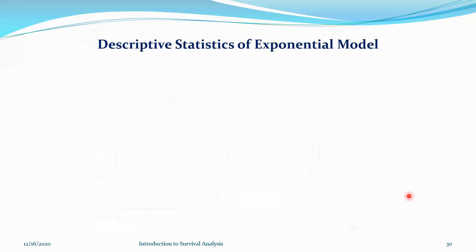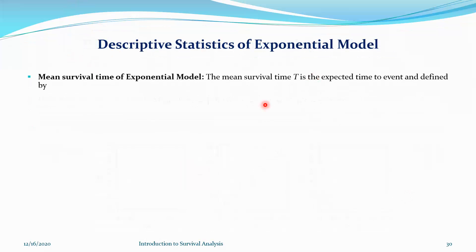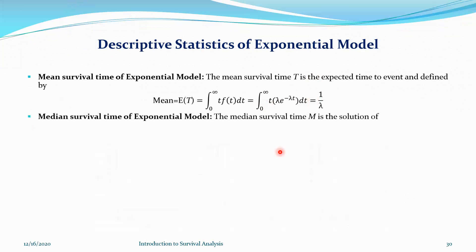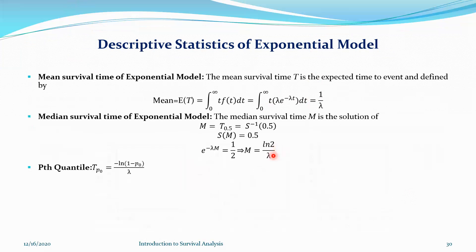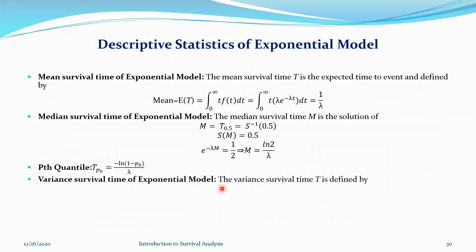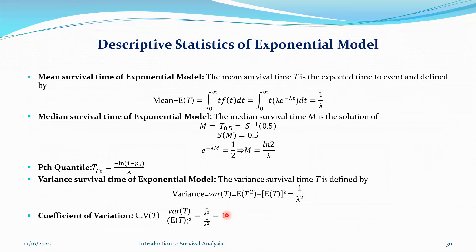Some descriptive statistics of the exponential distribution: the mean would be 1/λ, the median would be log(2)/λ, and this is your quantiles formula. The variance of the exponential distribution is 1/λ², and if you want to calculate the coefficient of variation, that would be exactly one.